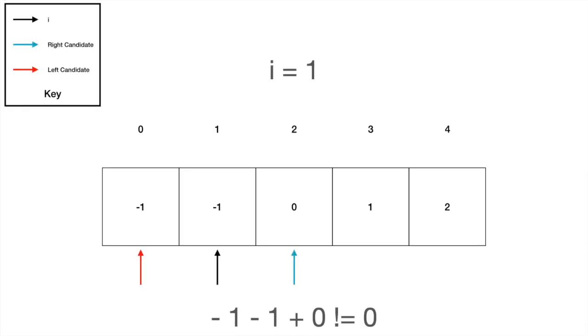So we have three pointers: I, right candidate, and left candidate. I traverses the array from one to the one before last element in the array. The left candidate is one to the left of I, and the right candidate is one to the right of I.